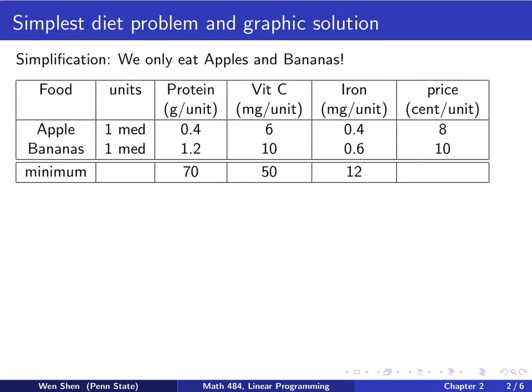Now we only eat apples and bananas, but we know that the minimum daily intake of the three types of nutrients must still be satisfied. So, these numbers, 70 for protein, 50 for vitamin C, and 12 for iron, they are not changed.